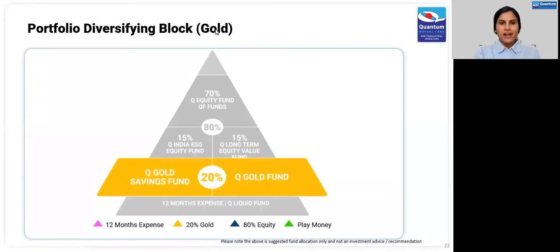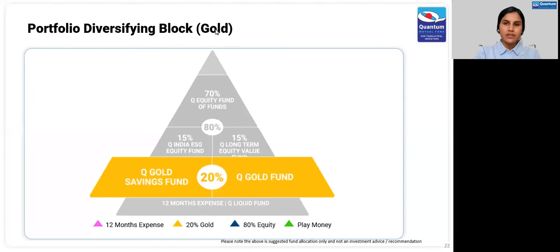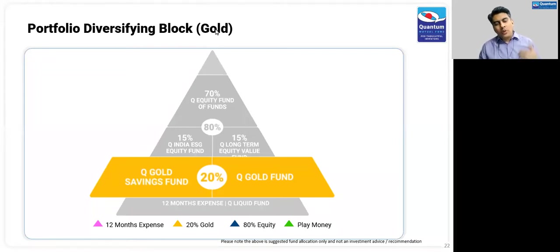Thanks, Pankaj, for that data-backed outlook on interest rates and inflation. I will now request Chirag to take us through the next element of the asset allocation framework: gold. Thank you, everyone, for joining us today. As Arvind and Pankaj talked about Indian macro, what drives gold is the global macro.